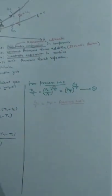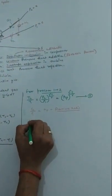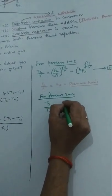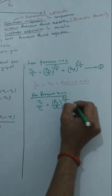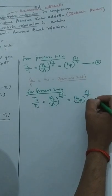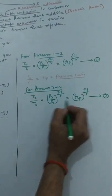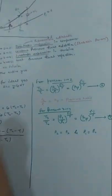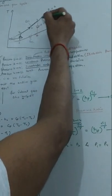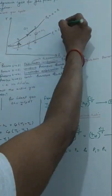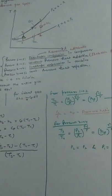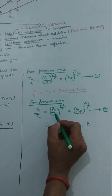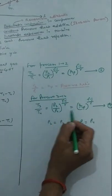Similarly, process 3 to 4 is an isentropic expansion process. For this process, T3/T4 = (P3/P4)^((γ-1)/γ) = Rp^((γ-1)/γ), which is equation number 3. Since P2 = P3 and P1 = P4 — these are constant pressure lines visible on the graph, two diverging constant-pressure lines — we can write P3/P4 = P2/P1 = Rp.